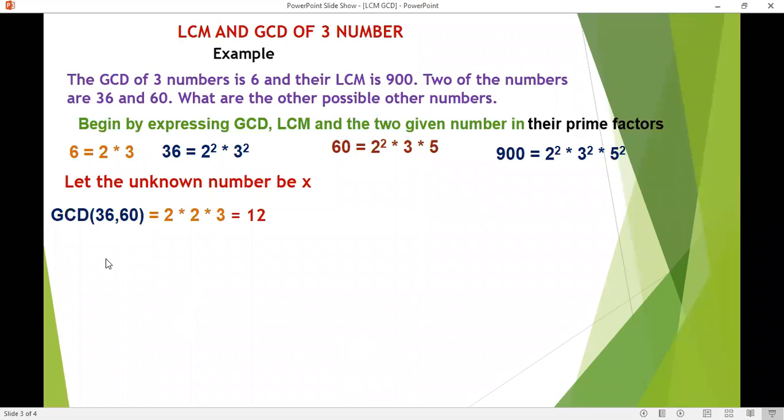So we first of all ask ourselves what would be the GCD of the two given numbers, 36 and 60, without our unknown. So in this case we find that the GCD of 36 and 60 is 12, but the GCD of the three numbers is 6.